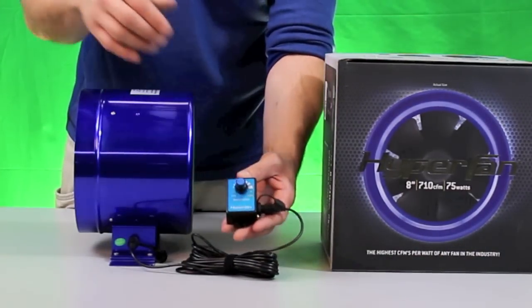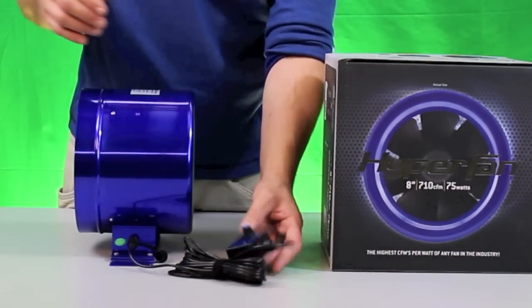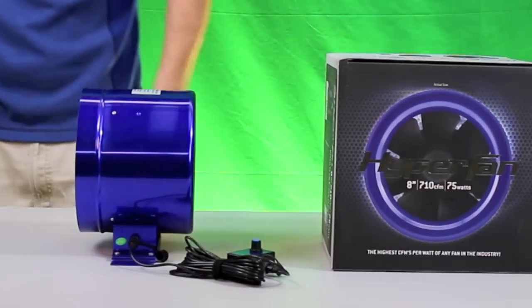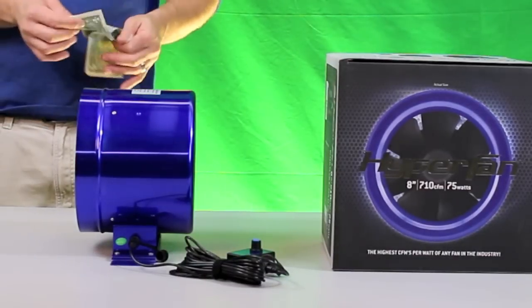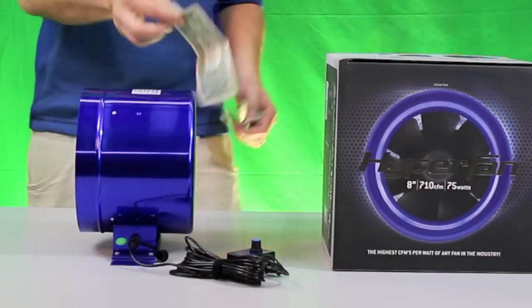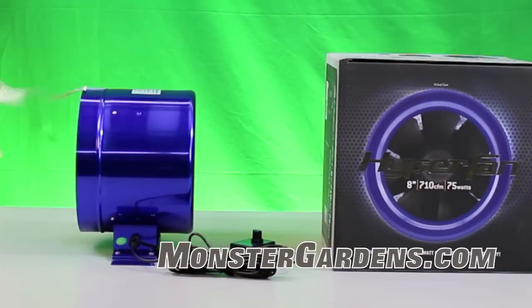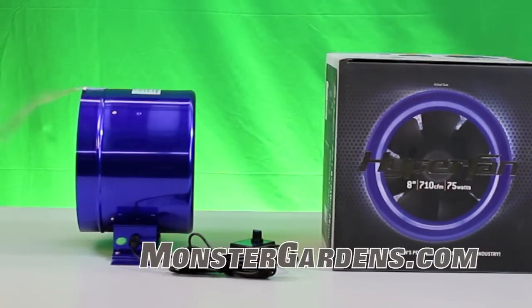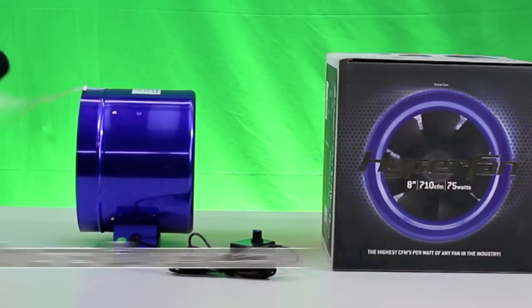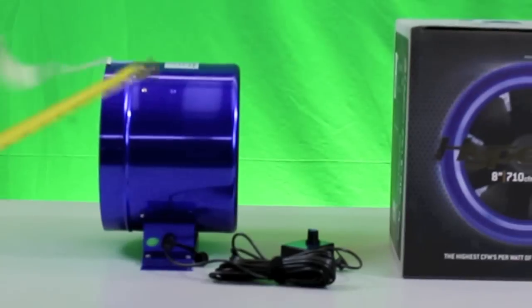So let's go ahead and turn the fan on. I have it in a 30% setting and I'm going to give you a visual representation just so you can see. Let's go ahead and take a DB test 12 inches from the fan, see how loud it is. It's about 60. Now let's go ahead and speed it up to 50%.